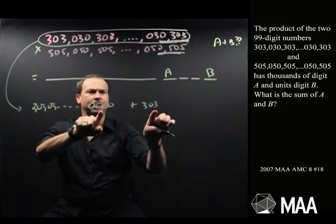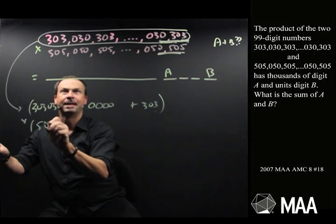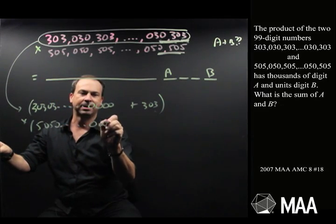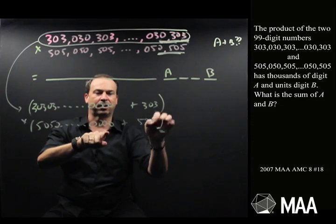I think I got that right. I want that times the next crazy number that also ends in 0000 plus 505. I think I got that right.